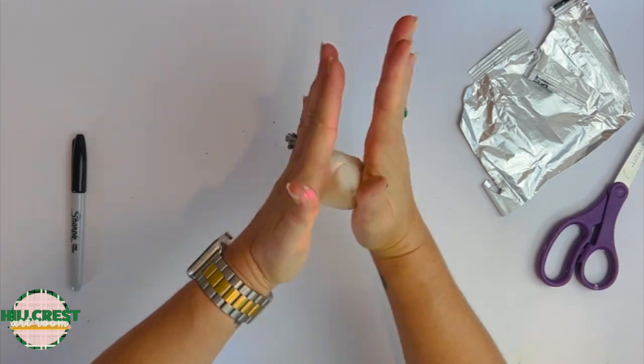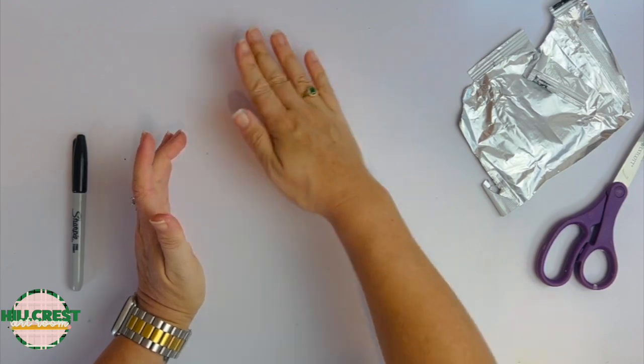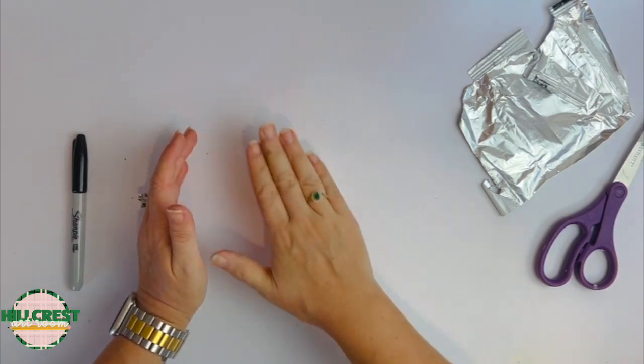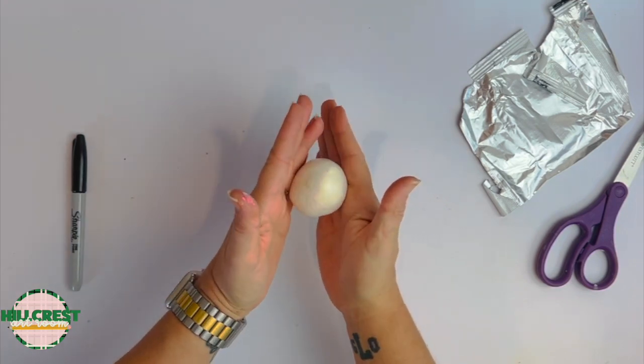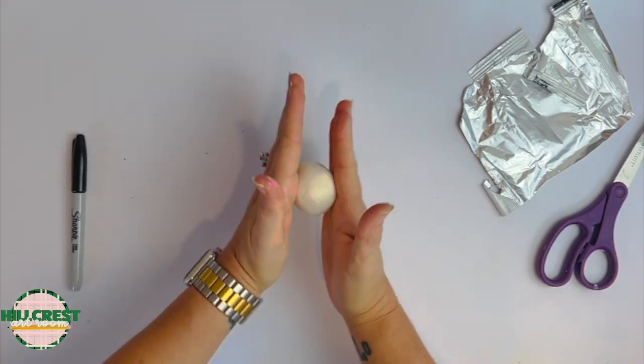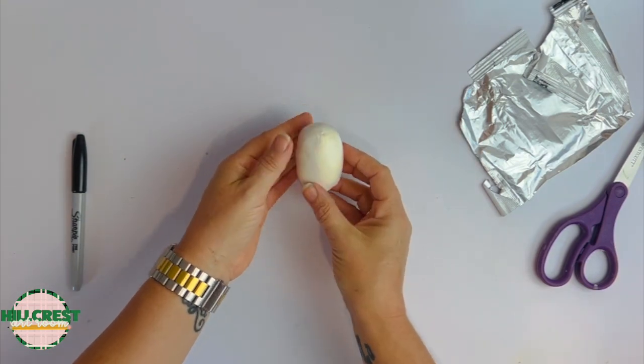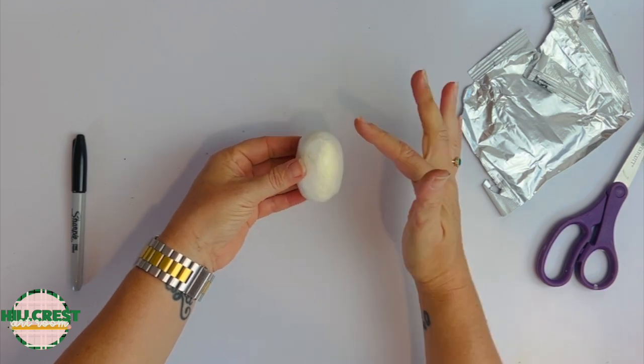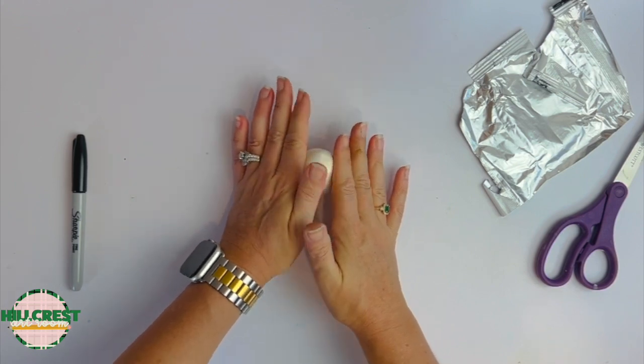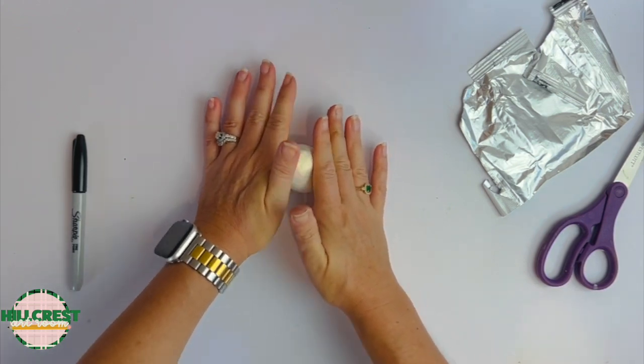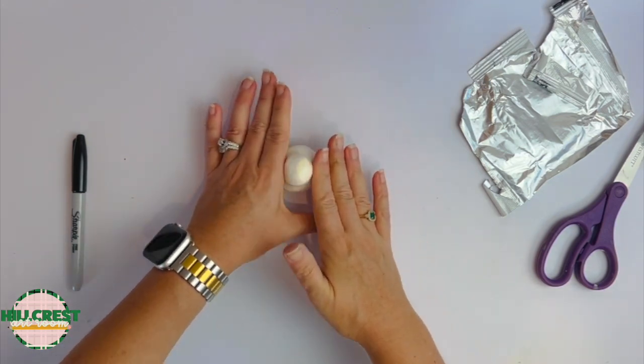So we're going to make a ghost. I'm going to roll it in a ball first. If your table's clean, you can use the table, but be careful if it's not clean - pick up whatever is on your table. Once you have your ball, we want to make it more of an oval. I want to keep the bottom thicker and make the head a little bit thinner, so I'm using my fingers to roll it. It's touching the table just to give it that flat bottom so it doesn't roll off.